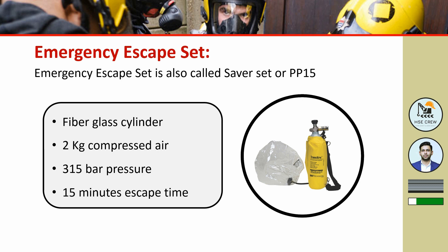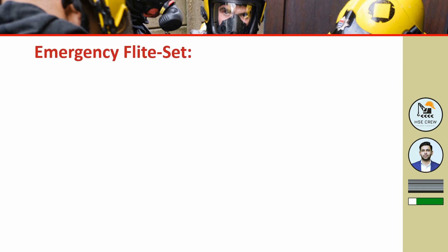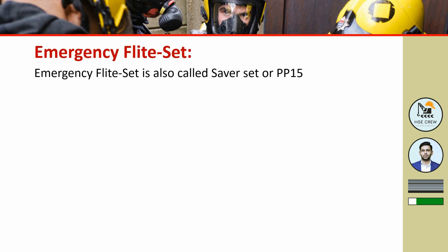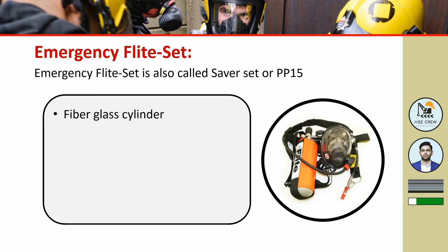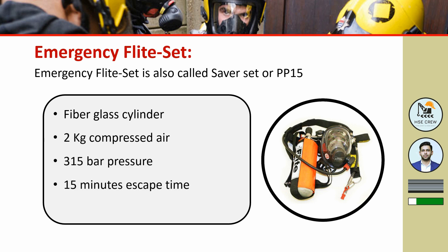Toxic gases such as hydrogen sulfide (H2S) can leak in these environments. The emergency escape set protects the wearer for 15 minutes so that they can evacuate the area safely and reach the assembly point. The emergency flight set has the same specifications: fiberglass cylinder, 2 kg compressed air at 315 bar pressure, and 15 minutes of escape time.